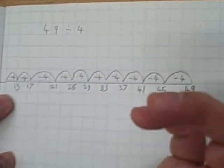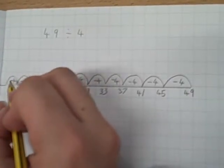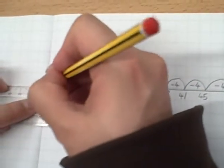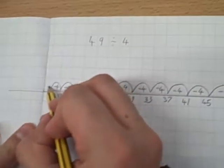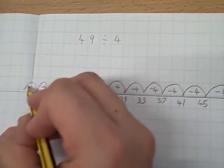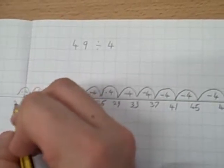Take away 4, is going to be 9. Again, I've run out of space. Take away 4, gives us 5.